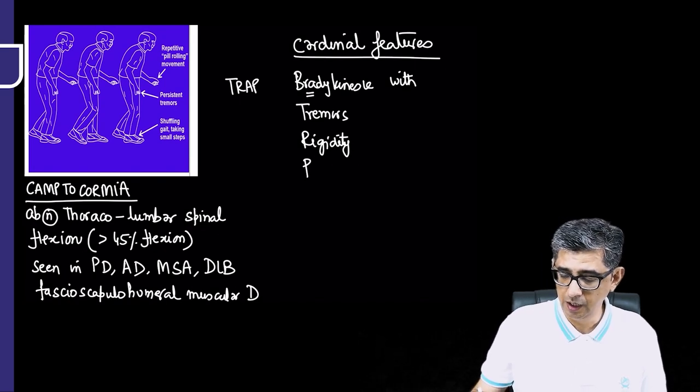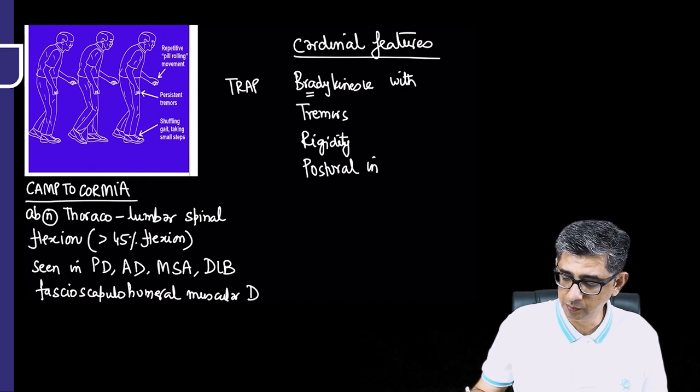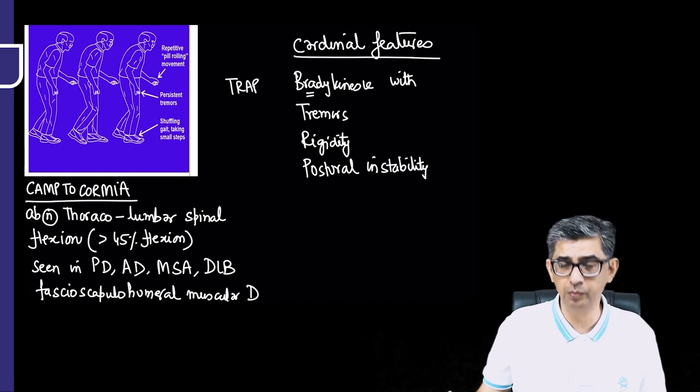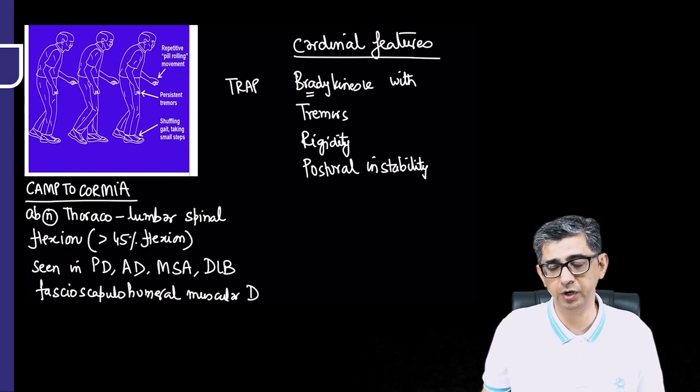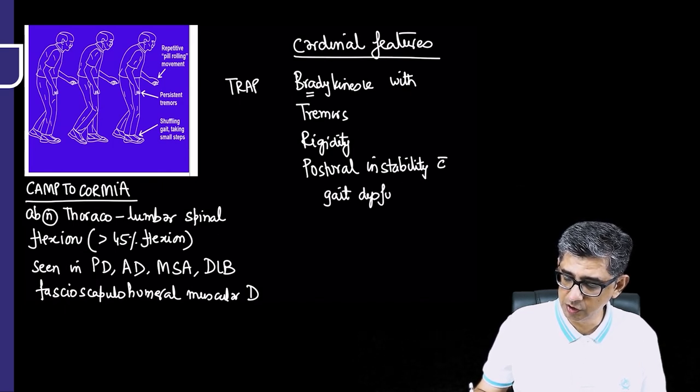The P component would be postural instability. Patients of Parkinsonism, especially if they have to turn suddenly, there is a possibility that they might even sustain a fall, a possible injury, a subdural hemorrhage can occur. So postural instability with gait dysfunction will occur in these patients.